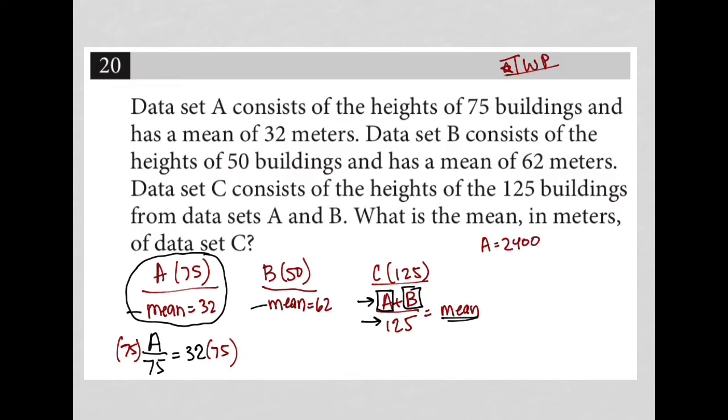I'm going to do the same thing for B. With B, we know that if B represented the sum of all the heights of all 50 buildings, then that means that B divided by 50 would equal 62. That's how we find the mean. And again, if I multiply both sides by 50, I should get just what B is equal to. So back to my calculator. 62 times 50 is equal to 3,100. So B equals 3,100.